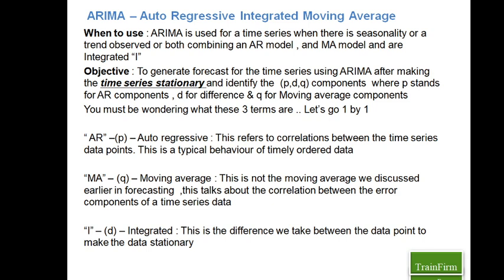When you predict, there will be a corresponding actual value for that prediction. We make some predictions and then observe the actual value — predicted versus actual. If I take the difference between the predicted and actual, I get the error component. I will have an error component for each and every data point in a time series. So I am going to study the correlation between these errors — how error t is correlated to error t minus 1, and how error t is correlated to error t minus 2.